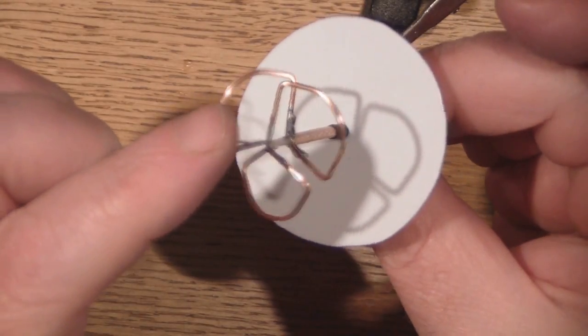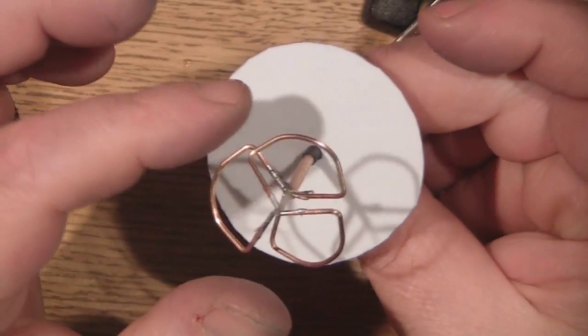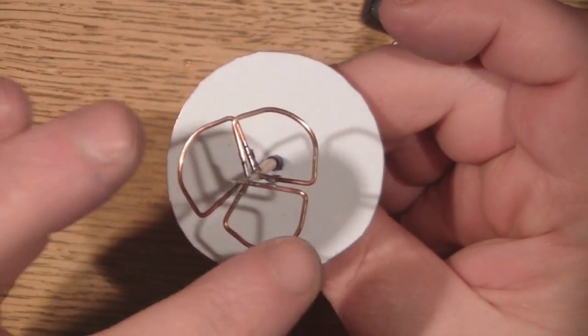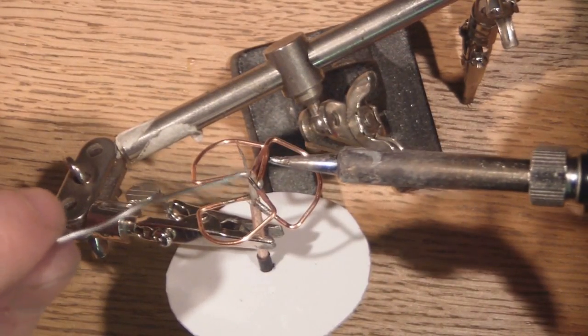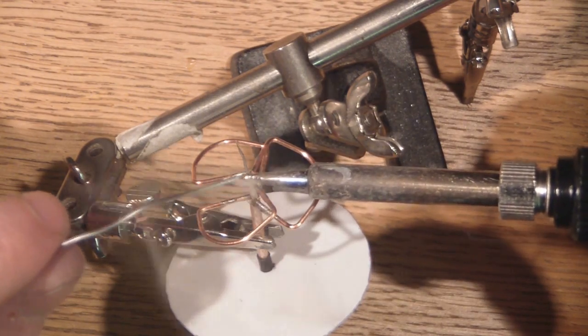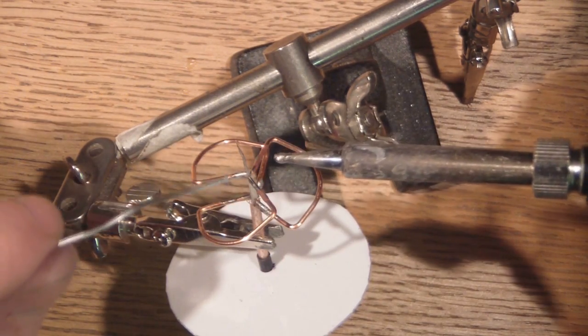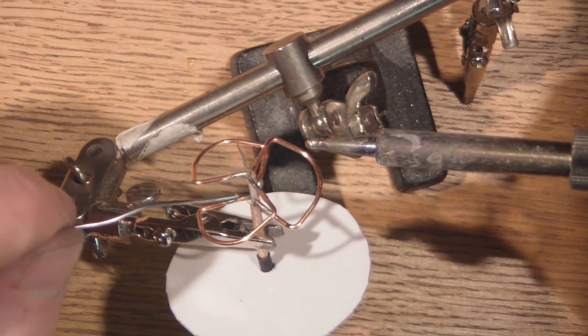Before you do that, once you've got your bottom legs soldered on, make sure you've got all three elements nice and uniform. When you're soldering the top legs onto the center element, don't keep your soldering iron on longer than you have to, because the heat will travel down here and end up de-soldering it from the bottom.